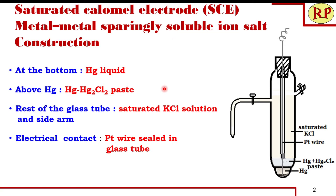The saturated calomel electrode falls into the category of metal-metal sparingly soluble salt electrode. The metal used here is mercury, and the sparingly soluble salt is mercurous chloride, which is placed above the mercury. At the bottom we have mercury, and above that is a paste of mercurous chloride in solid form. The common name of mercurous chloride is calomel, which is why we call it a calomel electrode.